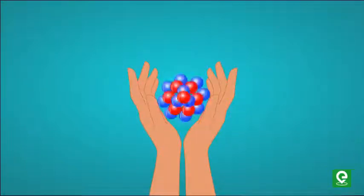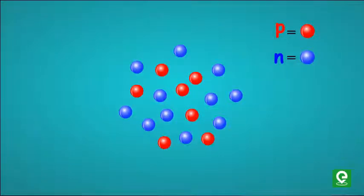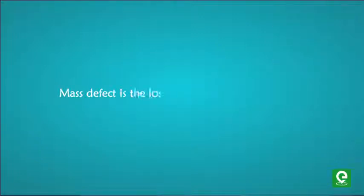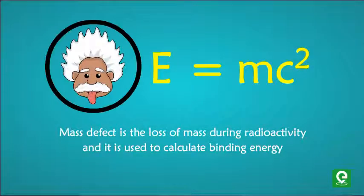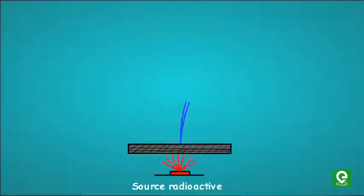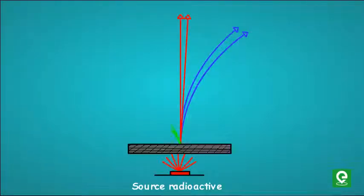Binding energy is the energy required to break the nucleus into constituents. Mass defect is the loss of mass during radioactivity, and it is used to calculate binding energy with help of our friend Einstein.